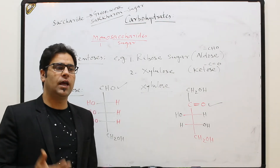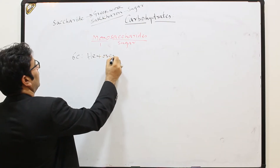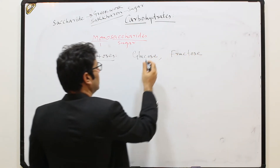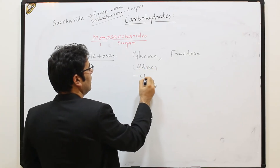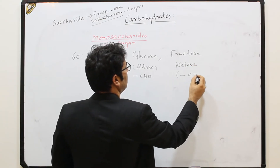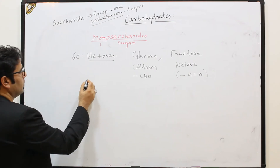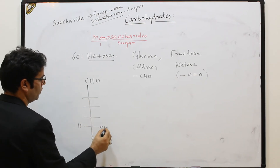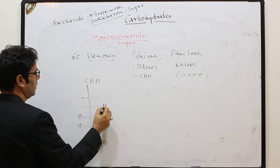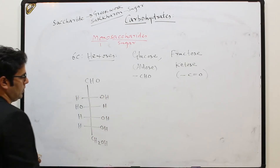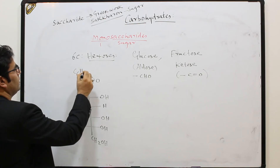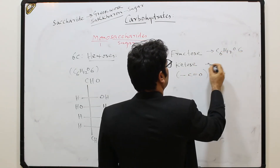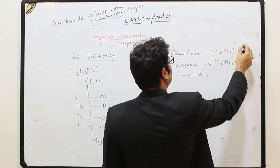Now let us discuss hexoses and heptoses. Hexoses are six-carbon sugars. Examples are glucose and fructose. Glucose is an aldose, containing an aldehyde group. Fructose is a ketose, containing a carbonyl (ketone) group. Glucose has formula CHO at top, then H-OH, H-OH, H-OH, H-OH, and CH2OH — six carbons total. Both glucose and fructose share the same molecular formula: C6H12O6.